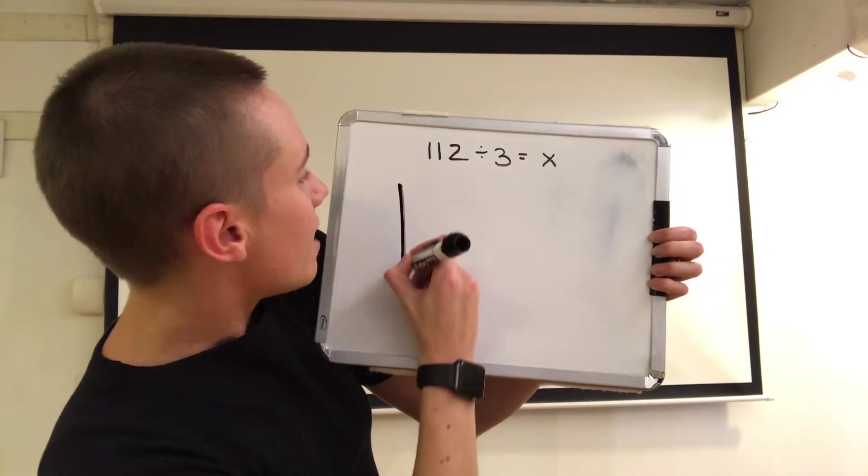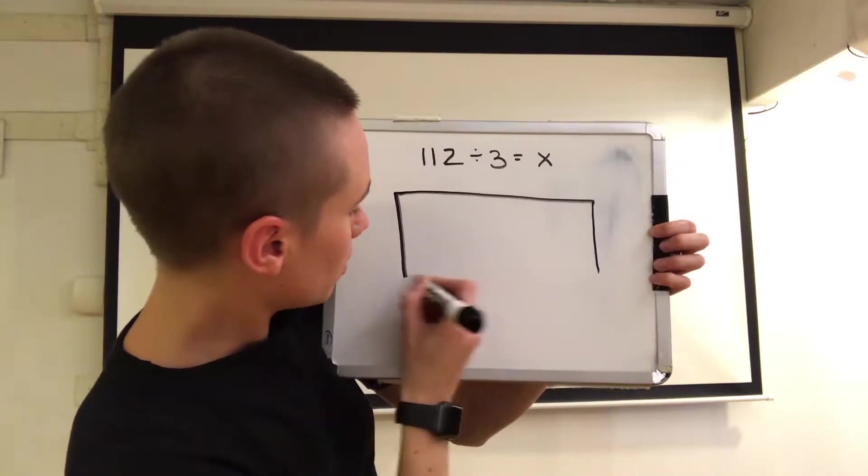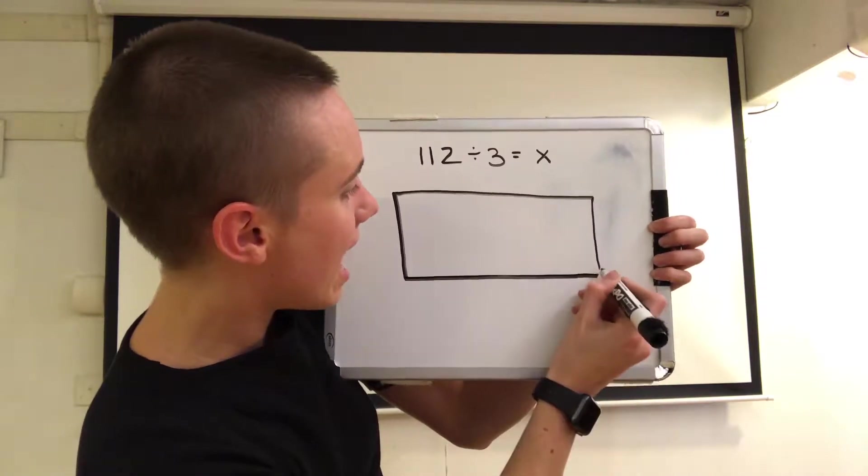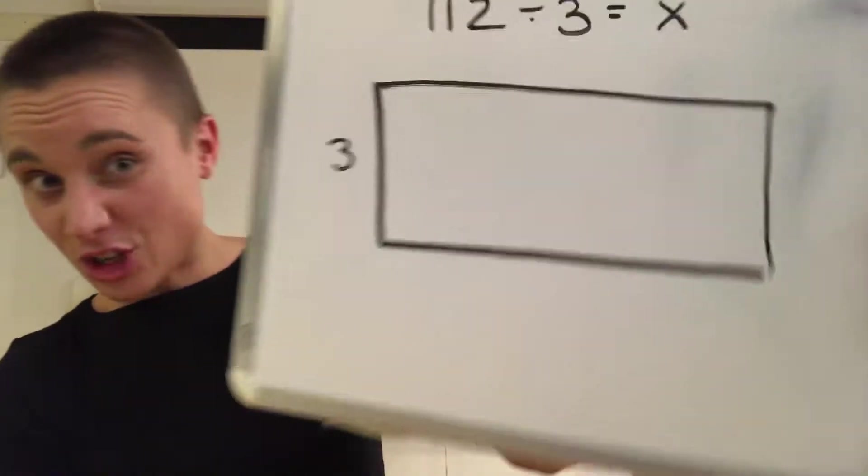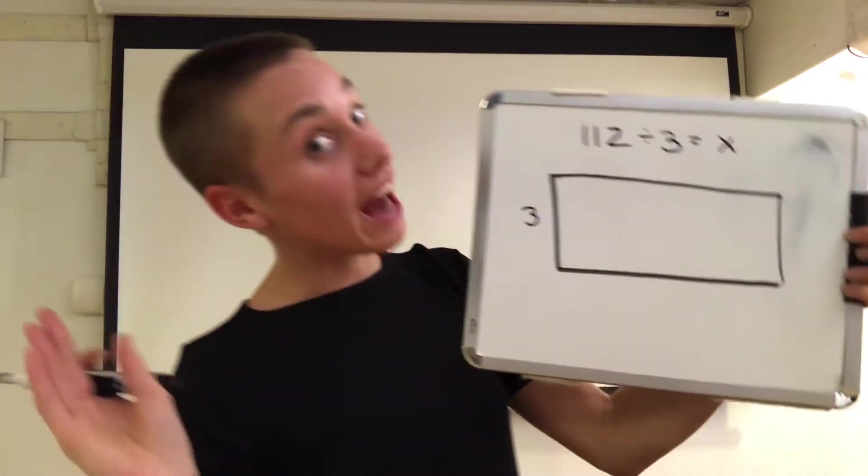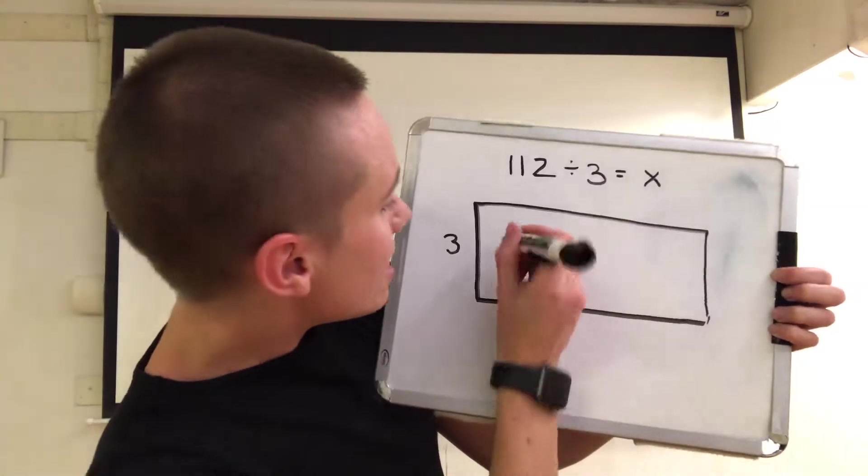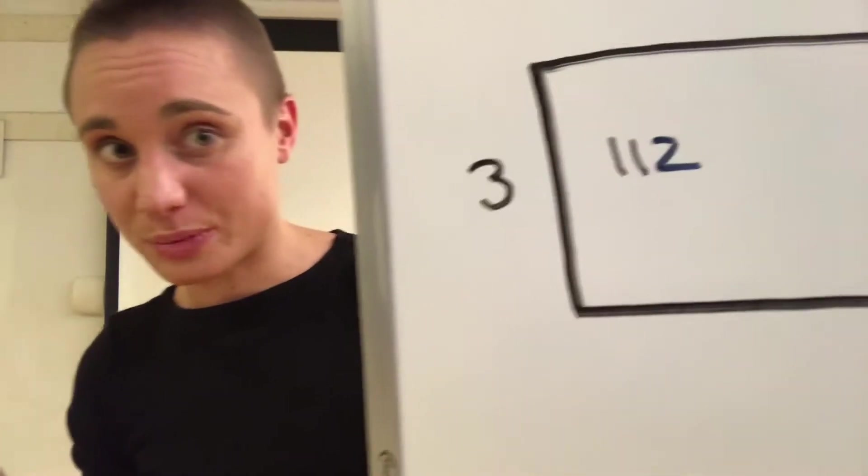And the ice cube tray has a width of 3 ice cubes. I don't know the length of this rectangle, but I do know the area of this rectangle. The area is 112 ice cubes.